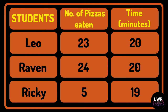The last three participants are Leia, Raven, and Ricky. Leia ate 23 pizzas in 20 minutes. Raven ate 24 pizzas in 20 minutes. And Ricky ate 5 pizzas in 19 minutes.